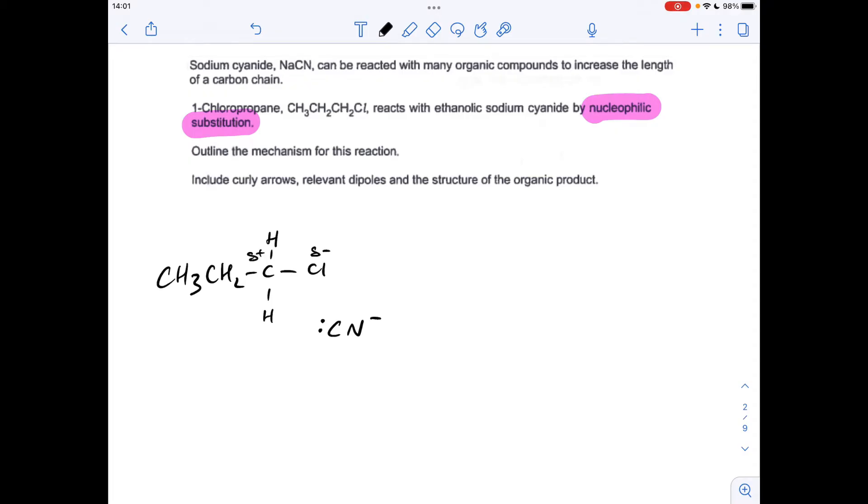So quite a simple mechanism, this one. So we take a pair of electrons from the cyanide ion, so that's why we show this lone pair here, and it's going to be attracted to that carbon. So we draw a curly arrow from that lone pair on the carbon to the delta positive carbon, and that's going to break this covalent bond between the carbon and the chlorine by heterolytic fission, and it's going to generate the product and a Cl- ion.